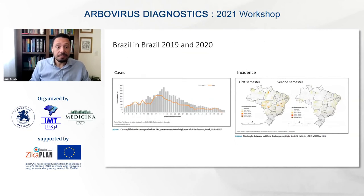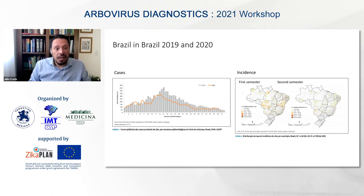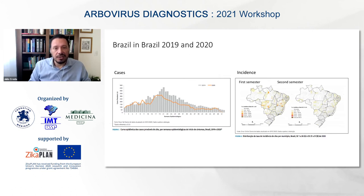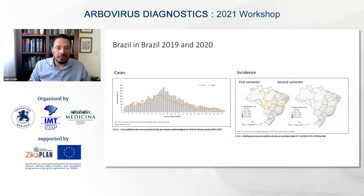More recent data comparing 2019 and 2020 shows a decrease in Zika case numbers. The majority of cases occurred between 2015 and 2016; nowadays there are fewer than 1,000 cases notified to the national reporting system. Comparing 2019 and 2020, the pattern is similar — a peak close to April — similar to chikungunya but different from dengue.